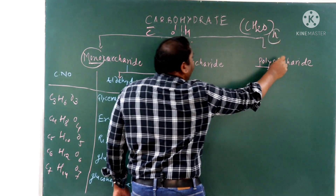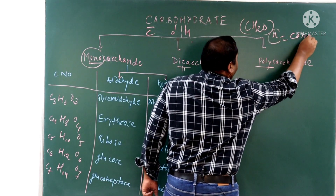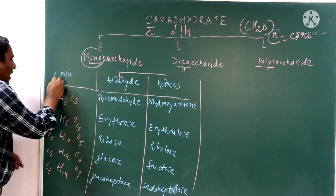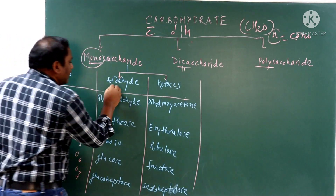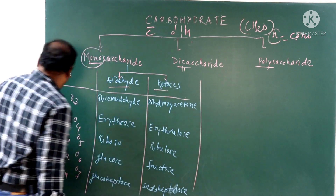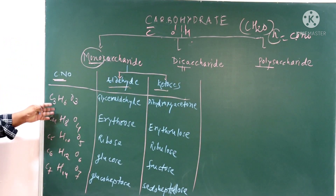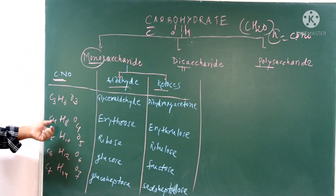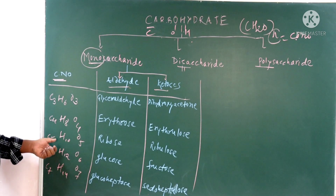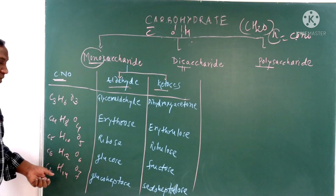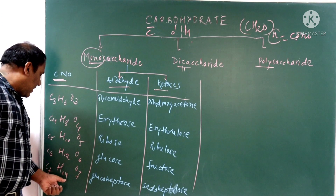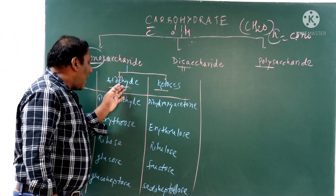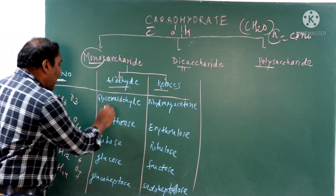The empirical formula for carbohydrates is (CH₂O)n, where n is the carbon number. Monosaccharides are classified based on their carbon number and the functional group present — aldehyde (aldose) or ketone (ketose). If carbon number is three, it is a triose; carbon four is a tetrose; carbon five is a pentose; carbon six is a hexose; and carbon seven is a heptose.